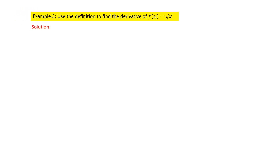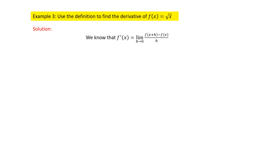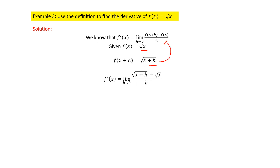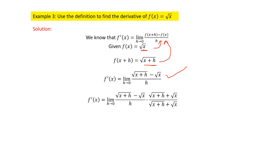Let us see one more example. Using the definition, we need to find the derivative of f(x) = √x. So f'(x) = limit as h → 0 of [f(x+h) − f(x)] / h. Here f(x) = √x, and f(x+h) = √(x+h). Substituting these two values into the definition gives [√(x+h) − √x] / h. However, if I replace h = 0 here, we get the 0/0 form.